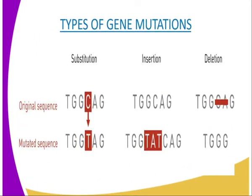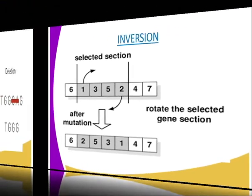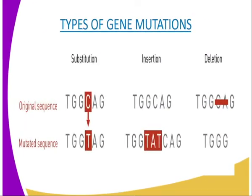Our diagrammatic representation on the screen represents all those types of gene mutations. We have got substitution, insertion, and also what we call inversion. According to our diagram, we have the original sequence, which is in uppercase, and we have the mutated sequence, which is in lowercase. So let us start with the first one, which is insertion.